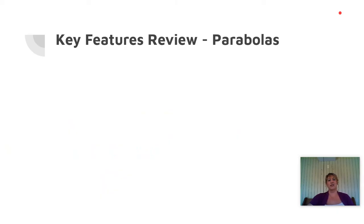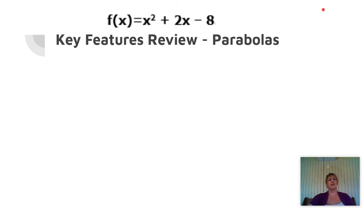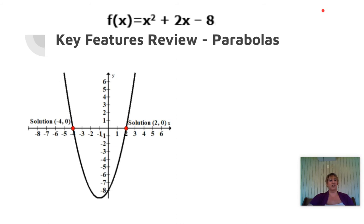We're going to do a little bit of a review of the key features of quadratic functions. Taking this function here — we know it's a quadratic because we've got that x squared. So we're going to take f of x equals x squared plus 2x minus 8, and the graph of this function looks like this. It's a curve, and remember that curve is called a parabola, and it has a few key features we talked about earlier.